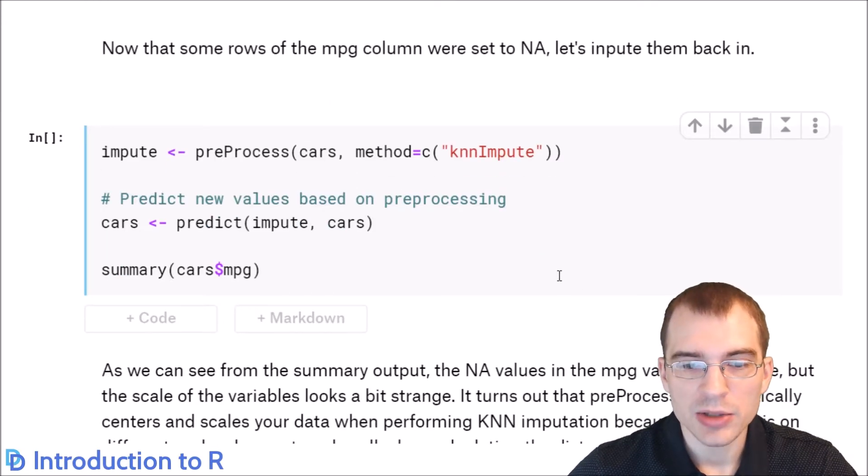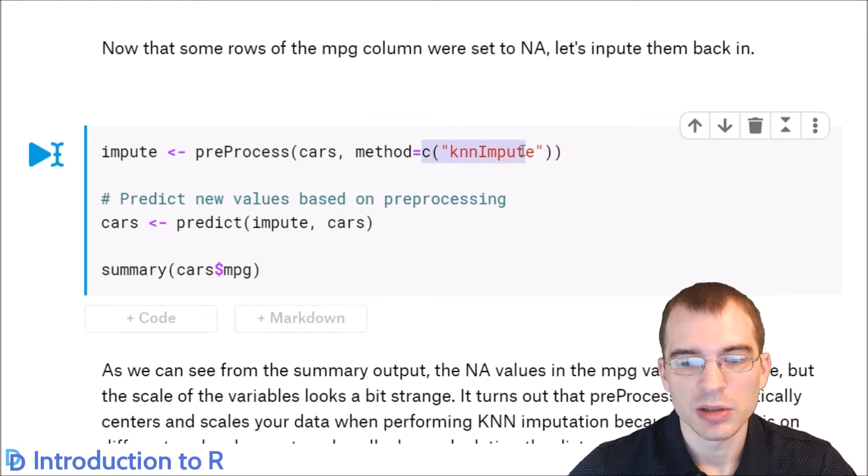We've loaded in the caret package and the rann package, which gives us access to these functions. To do this imputation, we use the preprocess function. We pass in the data set we want to impute for. In this case, we're passing in cars, which has those missing values we've removed from the MPG column. Now we'll say method equals. Then you pass in all the different preprocessing steps you want to do. We could have passed in center and scale to this method and that would have centered and scaled the data like we did above with just the scale function. In this case, we're going to pass in knn-impute, which means we want the preprocessor to use knn-imputation to fill in those missing values.